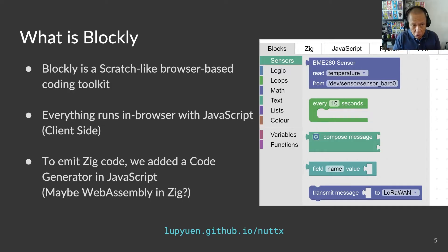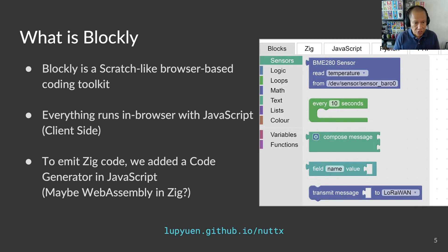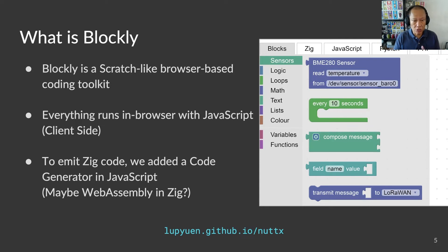The demo we saw is made possible by Blockly, which is an open-source browser-based toolkit that lets us create visual programs inspired by Scratch. Everything we've seen runs in the web browser — all client-side JavaScript, no server-side code needed. Blockly is customizable with JavaScript; we may create new blocks and support new languages. Blockly doesn't officially support Zig, so we added a code generator to Blockly to support Zig code — we built the code generator in JavaScript. Maybe someday we'll build it in WebAssembly with Zig.